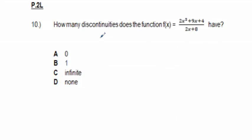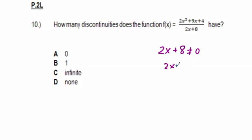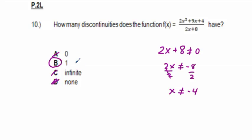Problem 10: how many discontinuities does f(x) = (2x² + 9x + 4) / (2x + 8) have? The denominator 2x + 8 cannot equal zero, so 2x ≠ -8, meaning x ≠ -4. There is at most one discontinuity. Answers A and D both say none, which is incorrect, and 'infinite discontinuity' is a junk answer — there is 1 discontinuity. That should have been an easy problem.